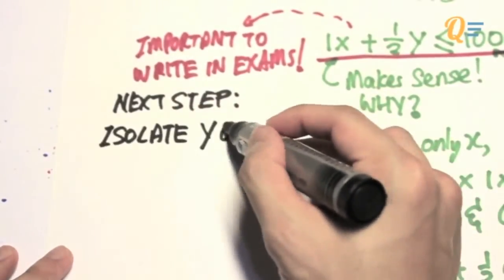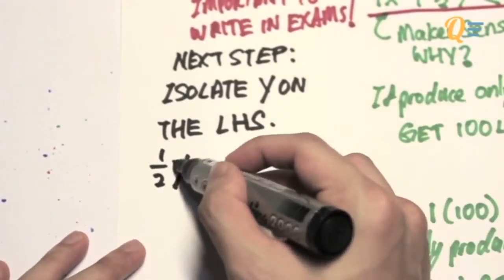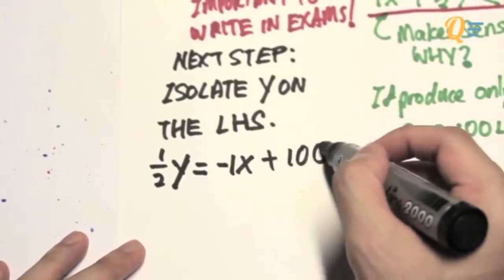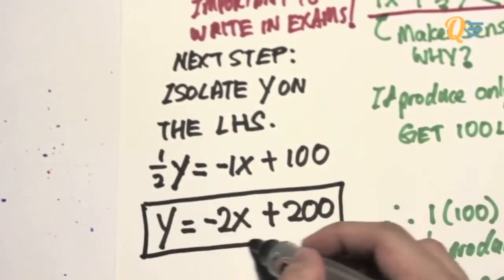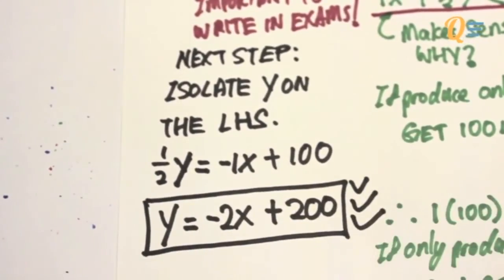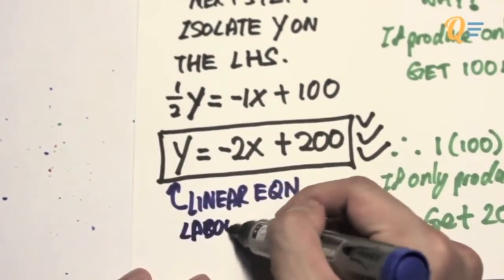What are the next steps? We are going to isolate Y on the left-hand side of the entire equation. We're just going to bring Y to the left side, multiply everybody by 2, and we're going to get the following equation. As you can see, this is a linear equation, and this is perfect because we're going to draw this line.